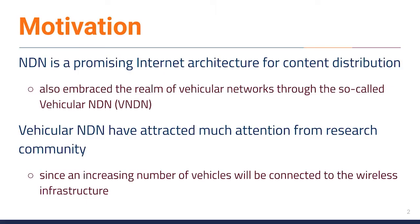Named Data Networking, or simply NDN, is a promising Internet architecture for content distribution, and has also embraced vehicular networks through the so-called vehicular NDN. NDN has been proposed to mitigate the disadvantages of the original Internet architecture. Unlike traditional IP networks, which are host-centric and heavily dependent on device location, NDN removes the need for end-to-end communication with a new approach to distributing and retrieving content.